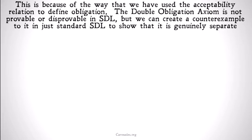Because of the way we have used the acceptability relation to define obligation, we're going to have a problem. The double obligation axiom is not provable or disprovable in SDL officially, but we can create a counterexample to it in standard SDL to show that it's a genuinely separate theory from SDL. We're not doing an official proof to disprove it — we're just providing an example in which all the theorems of SDL seem to hold, but the double obligation axiom does not.